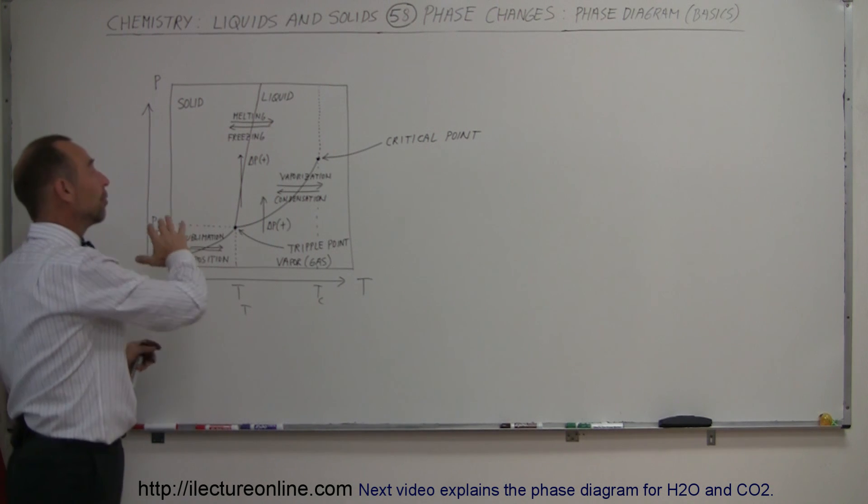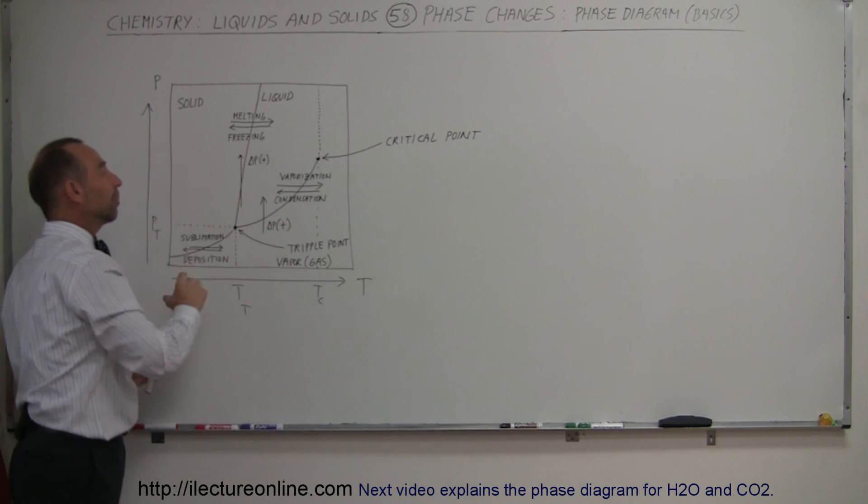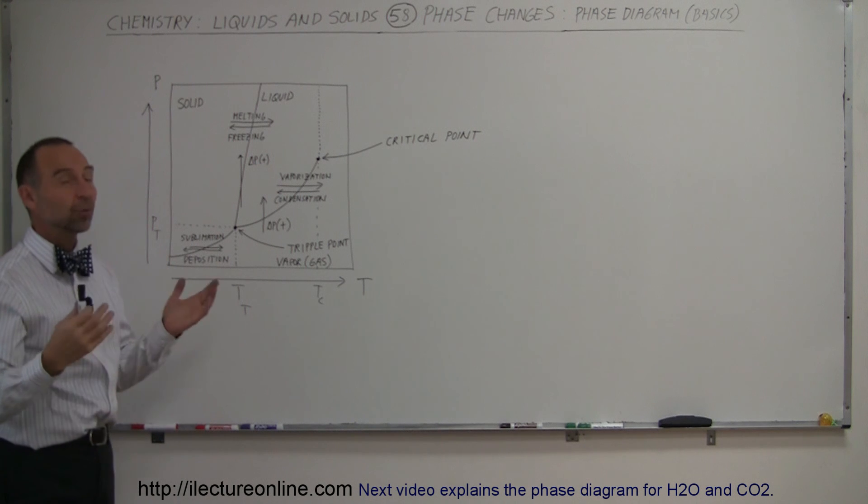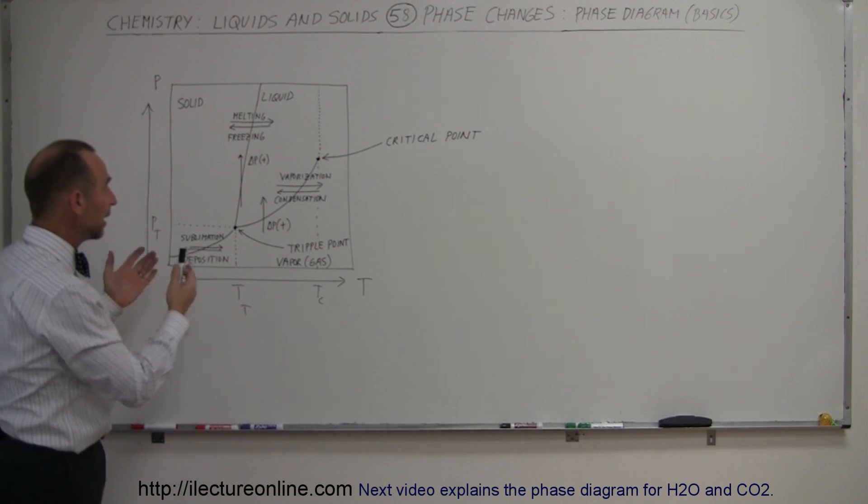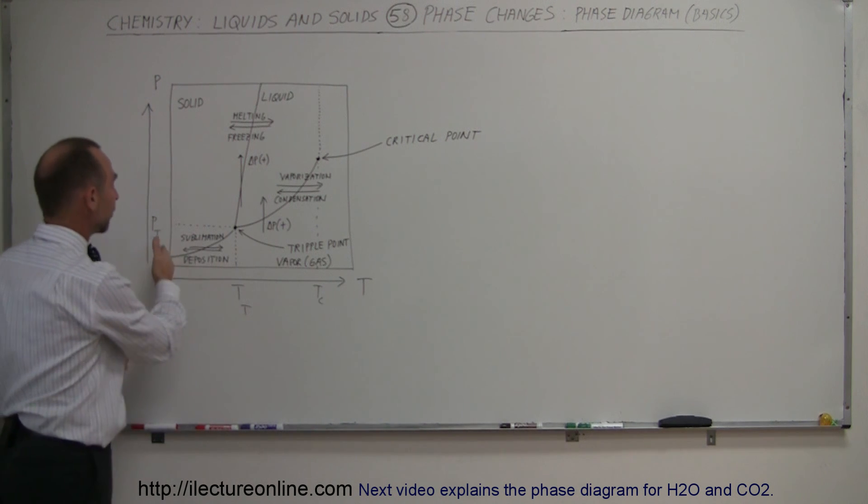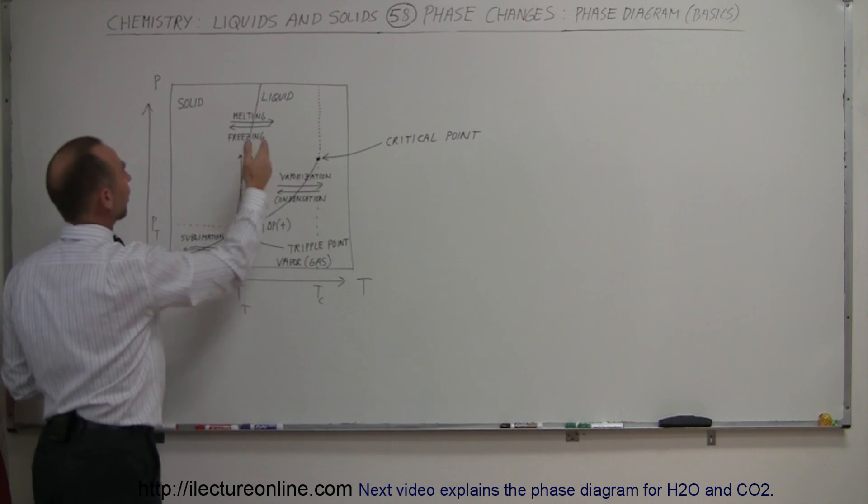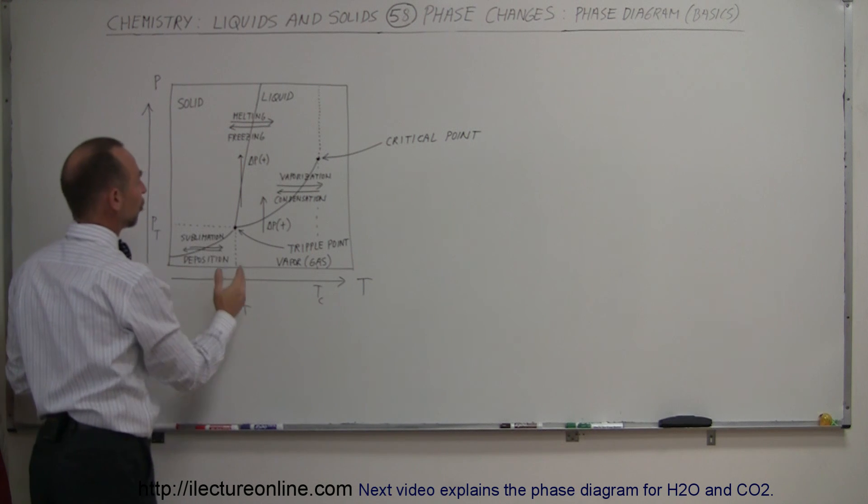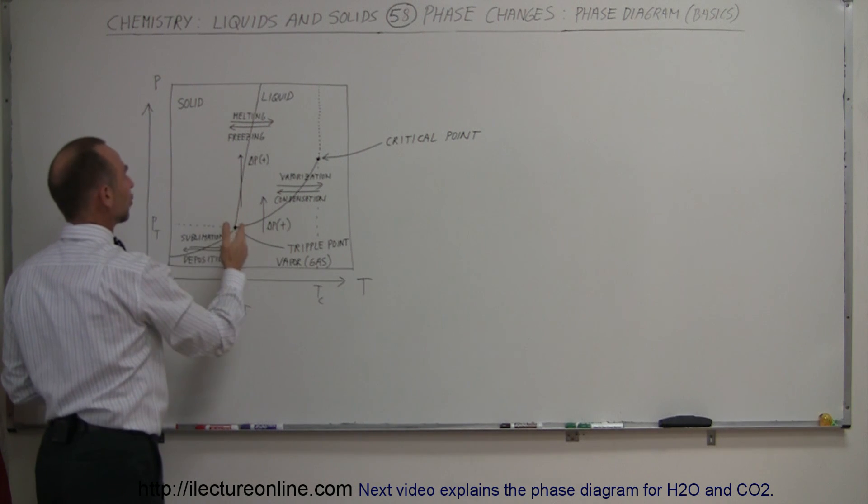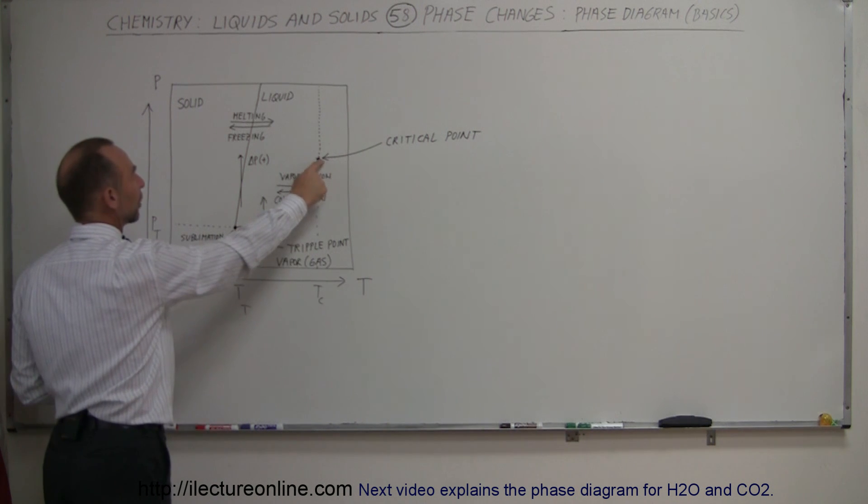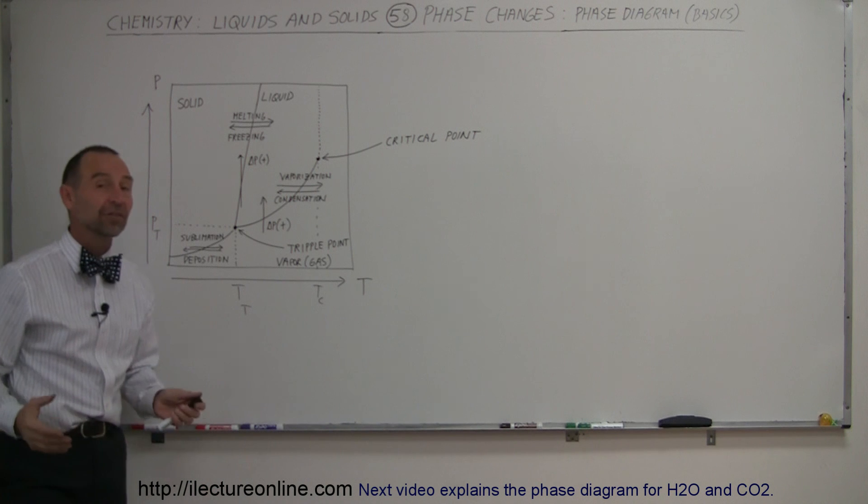And so almost any substance will behave in this fashion. And that's why a phase diagram is drawn the way it is. It shows all the various phase changes from solid to vapor, from liquid to vapor, from liquid to solid. And it shows how the change in pressure can cause the substance to go from one phase to another. Also, it indicates where the triple point is and indicates where the critical point is. So that's what a phase diagram is.